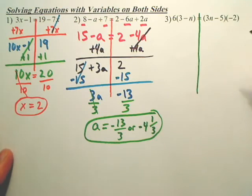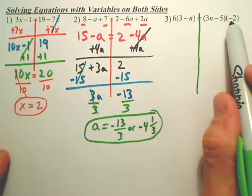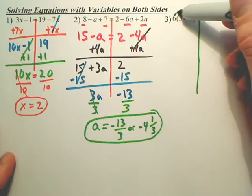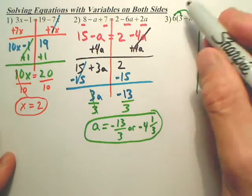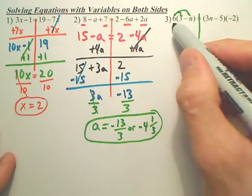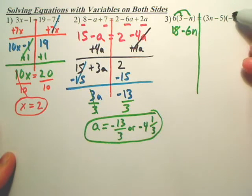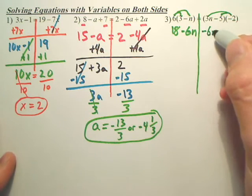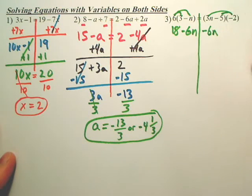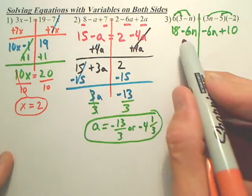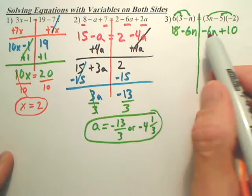The last problem. When we're solving, the first step we want to do is simplify each side. So we want to first simplify this side by distributing. So 6 times 3 is 18, 6 times negative n is negative 6n. Over here we want to distribute this, so negative 2 times 3n is negative 6n, negative 2 times negative 5 is positive 10. So we distributed, we simplified both sides. Can you combine any like terms? On each side you can't combine anything.